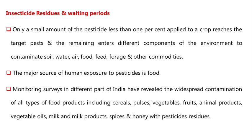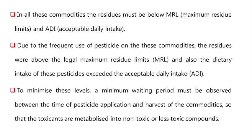The major source of human exposure to pesticides is food. Monitoring surveys in different parts of India have revealed widespread contamination of all types of food products including cereals, pulses, vegetables, fruits, animal products, vegetable oils, milk and milk products, spices and honey with pesticide residues. In all these commodities, the residues must be below the maximum residue limits (MRL) and the acceptable daily intake (ADI).